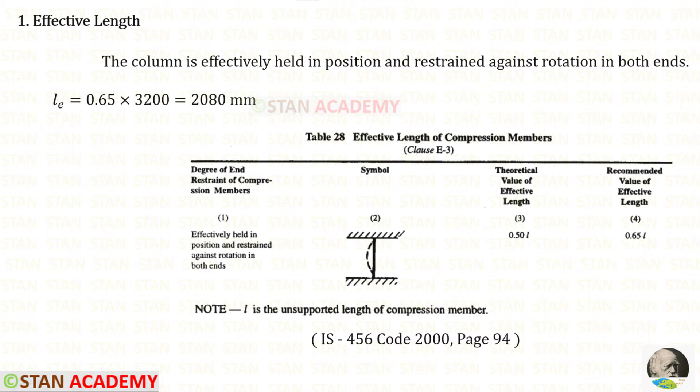The first step is to find the effective length. To find that we have to open the IS456 code book page number 94. In that page we have to see the table number 28. In the question, it is given that the column is effectively held in position and restrained against rotation in both the ends. So we have to select the first condition. The formula to find the effective length is 0.65L. So 0.65 times 3200 we will get 2080 millimeter.